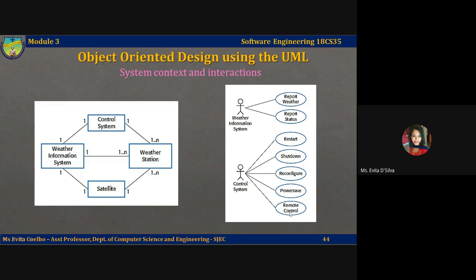The use case model for the wilderness weather station is shown here. This shows that the weather station interacts with the weather information system. It reports the weather data and the status of the weather station hardware. Other interactions include the control system that can issue specific weather station control commands. A stick figure here represents other systems as well as human actors. Each of these use cases — there are eight use cases in total — represents one single interaction.